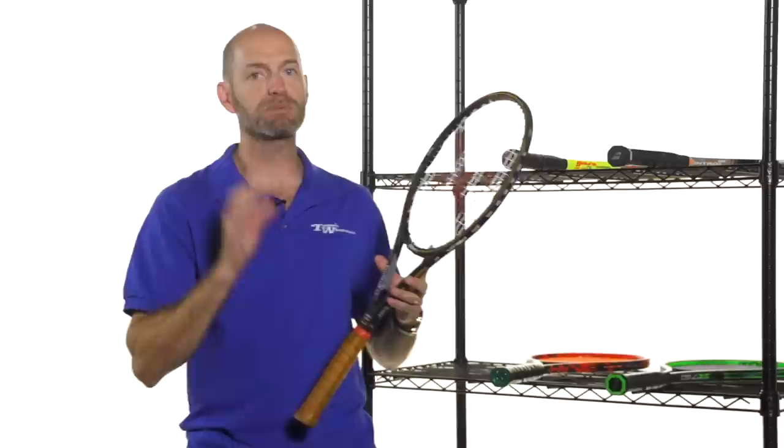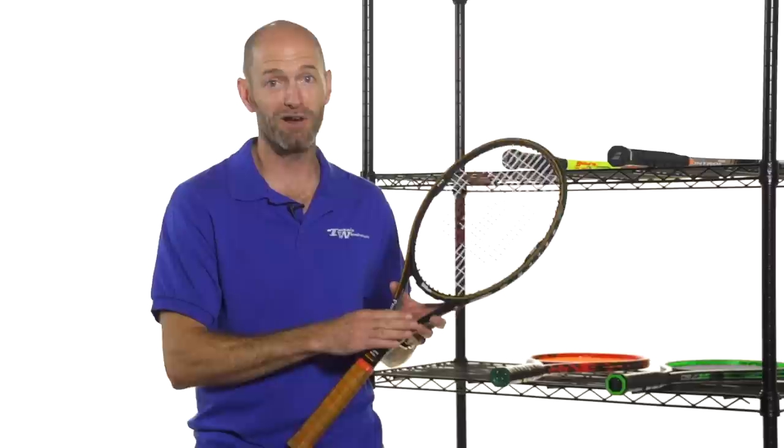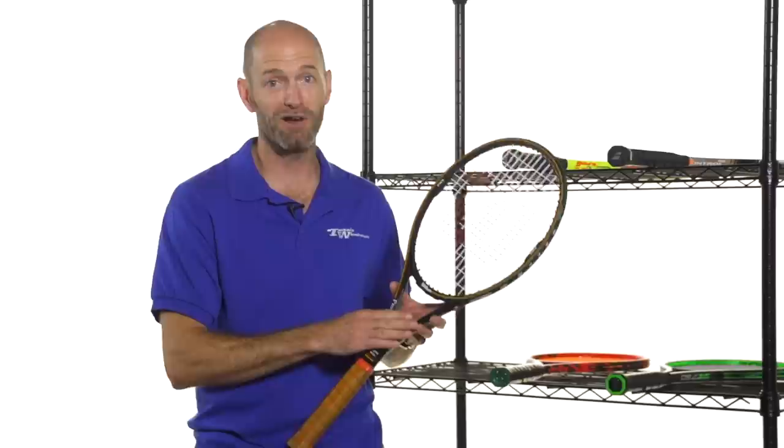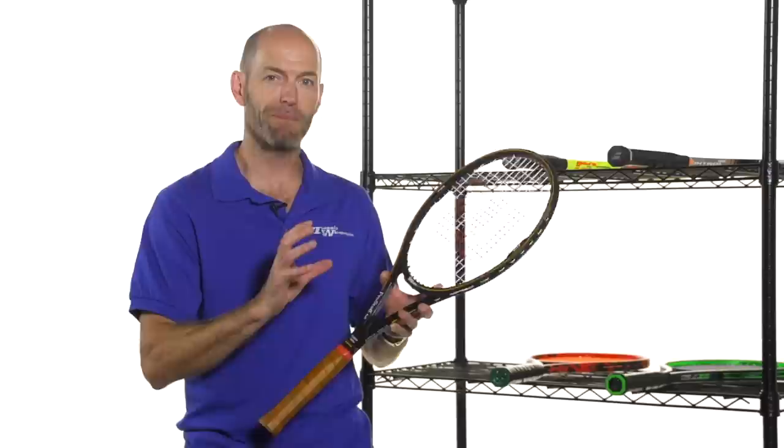First up, we are going to start with an absolute classic, and this is the Wilson Pro Staff 6.085. This was Pete Sampras' racket, Roger Federer used this racket, Stefan Edberg, Roger Federer's coach used this racket. A ton of great names associated with this one. It's got a ton of grand slams behind it in its history, and it's still viable today. If you like to serve and volley, or if you just love that feel and control, really look to manipulate the ball around the court, get it to targets with a lot of mass coming in behind it, this is a great racket to do it with.